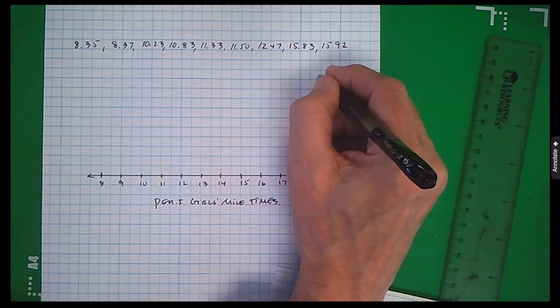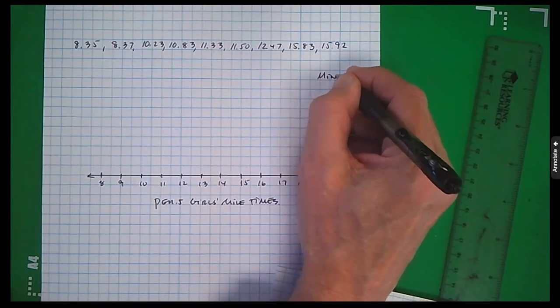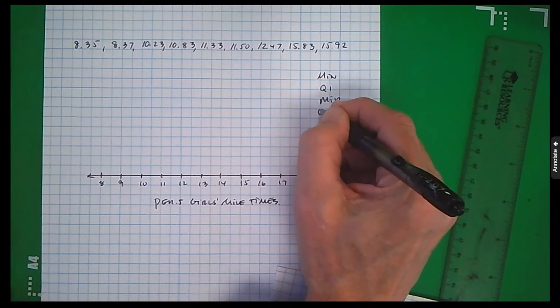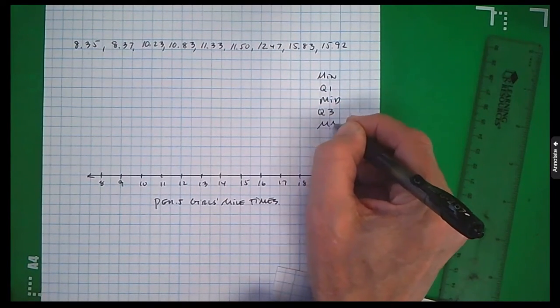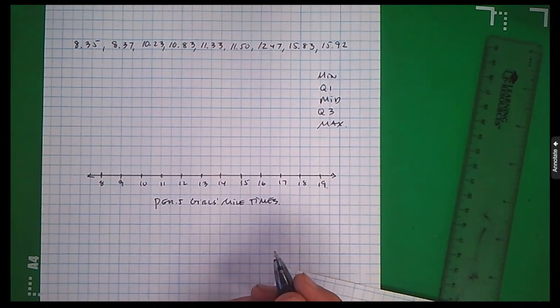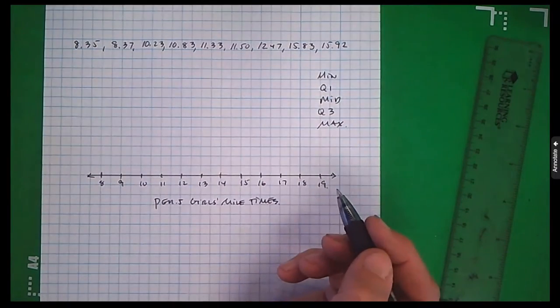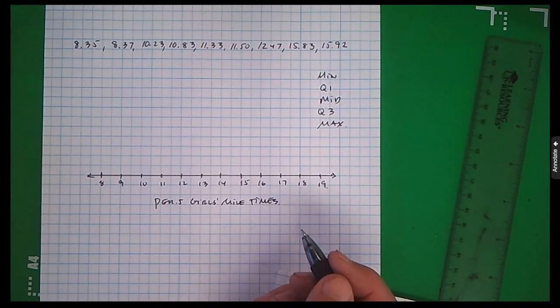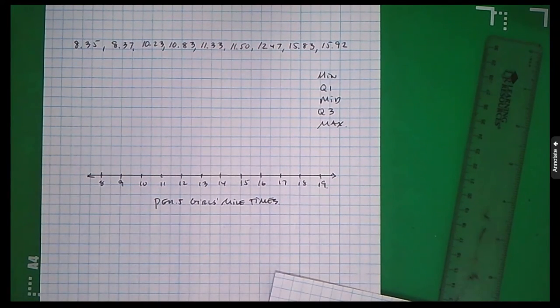Write them down. See if you can find the five numbers in the summary. Take a minute. Pause the video. See if you can find those five numbers. See if you can make the box and whisker plot. Take a minute. And then once you're ready, go ahead and check your answer.